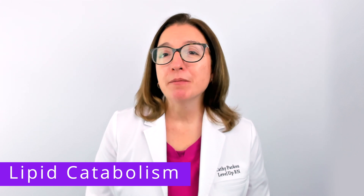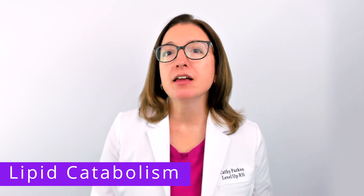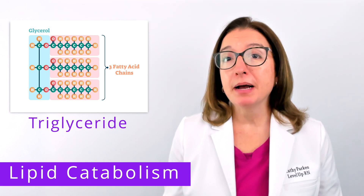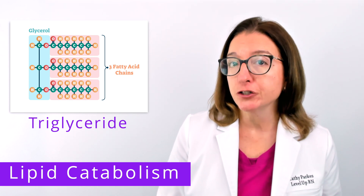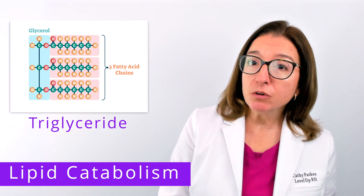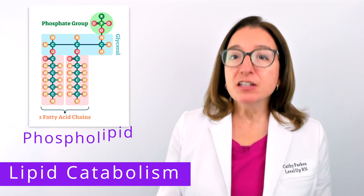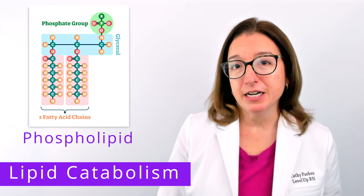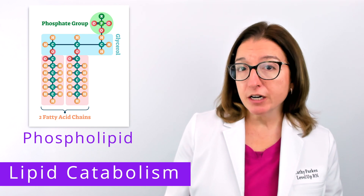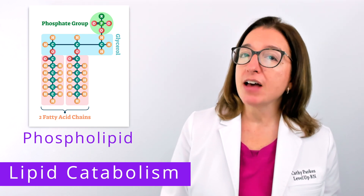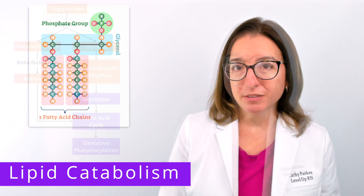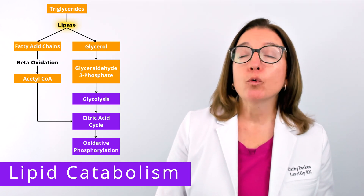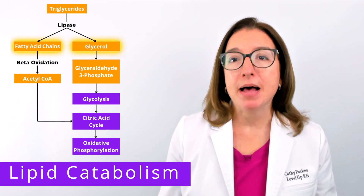Let's first talk about the catabolism of lipids, such as triglycerides and phospholipids. Triglycerides are an important type of lipid used by animals for long-term energy storage. They are composed of a glycerol and three fatty acids. A phospholipid is another important type of lipid that is a key component of cell membranes. Its structure is very similar to triglycerides, except one of the fatty acids is replaced with a phosphate group. To break down a triglyceride, lipase, which is an enzyme, removes the fatty acid chains from the glycerol backbone.